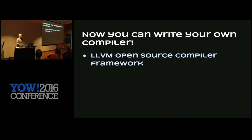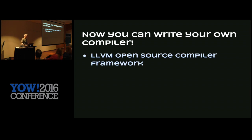So how can we do this? It has got quite a lot easier to make your own language. If you're going to make your own language, you probably want your own compiler. The LLVM open source compiler framework has become very mature — it's got nice APIs, lots of great tools, and it's all open source under a very liberal license, which allows you to do pretty much what you want with it.